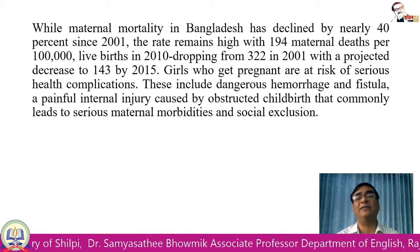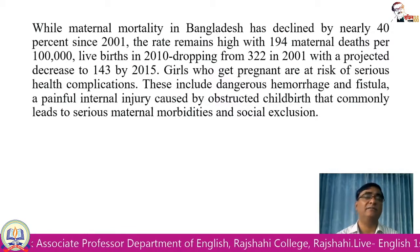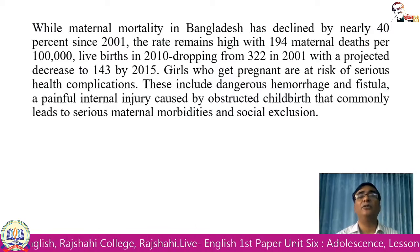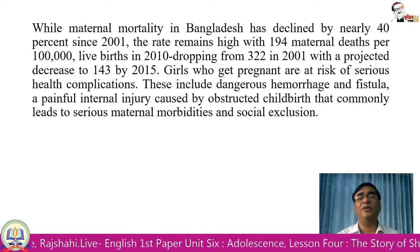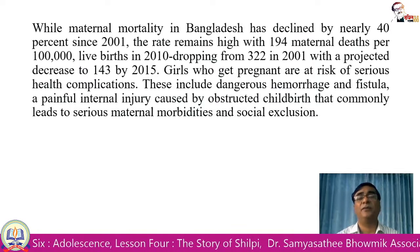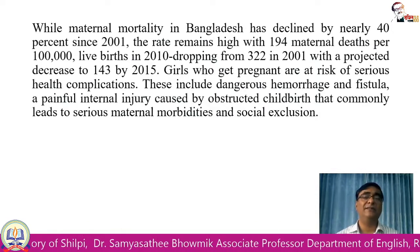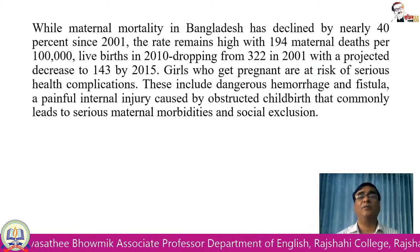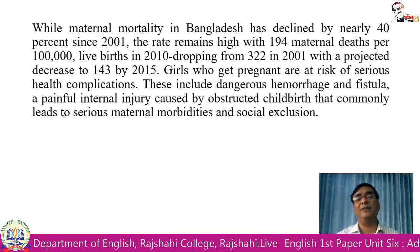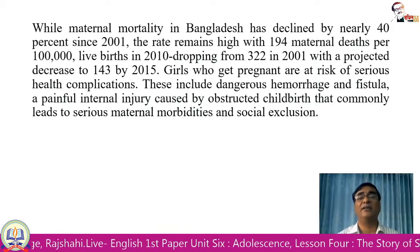Adolescent girls who become pregnant experience different serious health complications. These include dangerous hemorrhage — meaning internal bleeding — and fistula, which is puncture of tissues. Since their body is not yet adult, it is not ready to carry a child, so these complications like internal hemorrhage and fistula occur naturally.